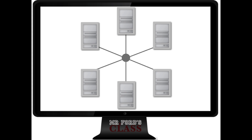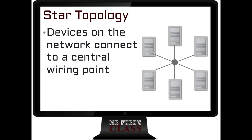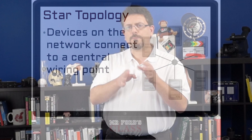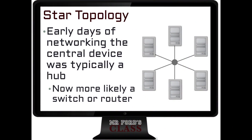The STAR topology is the most commonly widely used physical topology. Devices on the network connect to a central wiring point. Up to now, we had the BUS topology, which had a backbone cable and all the devices attached to that cable. We had a ring topology, which was a ring and all devices attached to this ring of cable. The STAR topology has a central device — in the early days this was maybe a hub, currently we either use a switch or a router — and all the devices are attached to the central point, with cables that go down to each device, each node on that network.